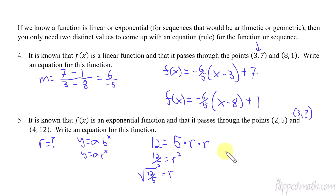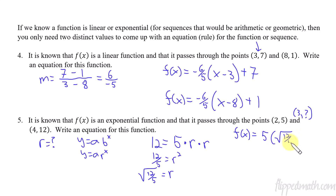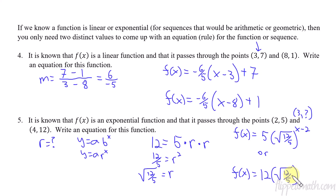Now that we know r, we can write the equation. Using the first coordinate point: f(x) equals 5 times the square root of 12/5 raised to (x minus 2). Or using the other coordinate point: f(x) equals 12 times the square root of 12/5 raised to (x minus 4). Either one would work — just put one of them on the practice.